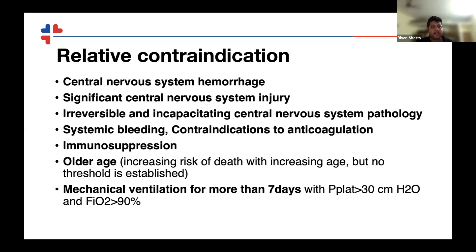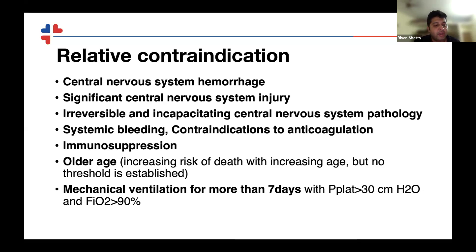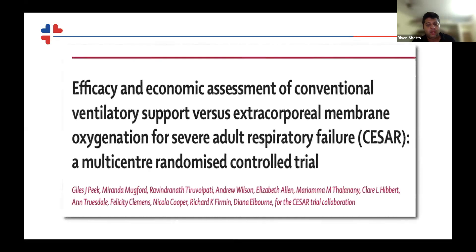Relative contraindications are: central nervous system hemorrhage, significant CNS injury, irreversible CNS pathology, any systemic bleeding or contraindications to anticoagulation, immunosuppression, and older age — though what constitutes old age is very debatable. Also, mechanical ventilation for more than 7 days with a plateau pressure greater than 30 cmH2O and FiO2 greater than 90% is a relative contraindication.